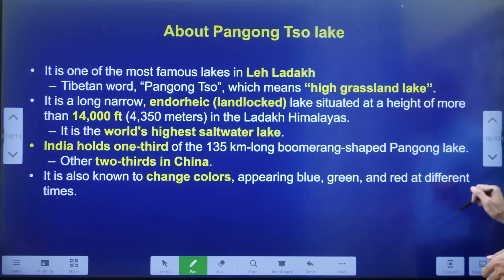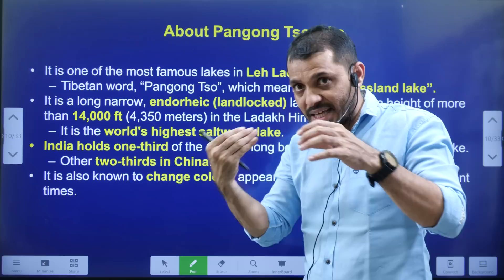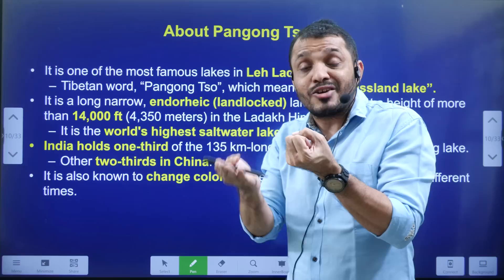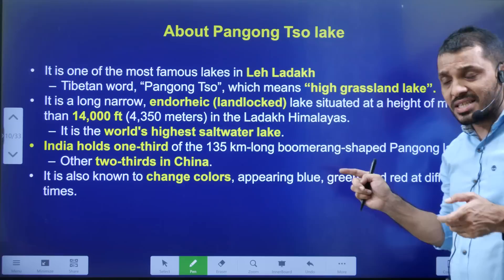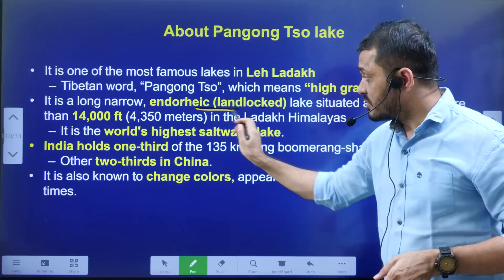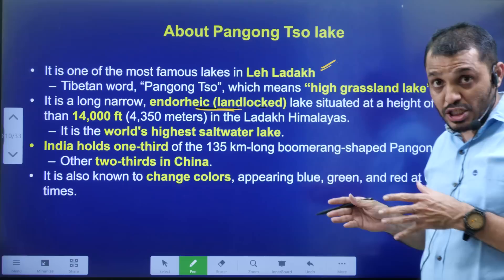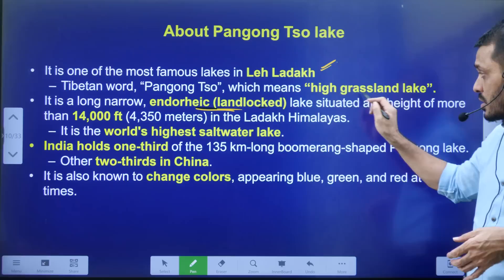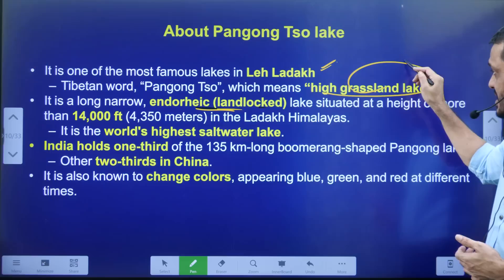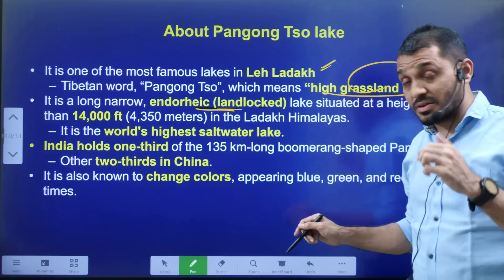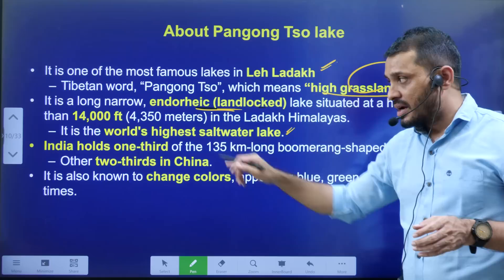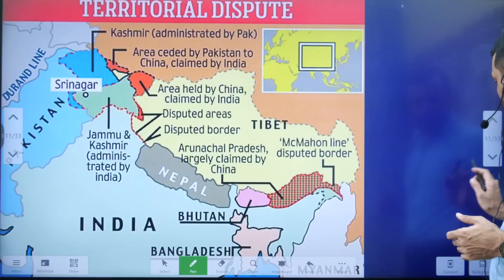Pangong Lake has no outlet — water only evaporates from it. As water evaporates, the salt content remains, making it a salt lake. This type of lake is called an endorheic lake — a lake without an outlet, causing it to become very saline. It is one of the most popular lakes in Ladakh. The Tibetan word 'Pangong' means 'high grassland lake.' It is situated at a height of 14,000 feet above sea level. India claims one-third of the lake, and two-thirds are on the Chinese side. The lake is known for frequently changing its colors.